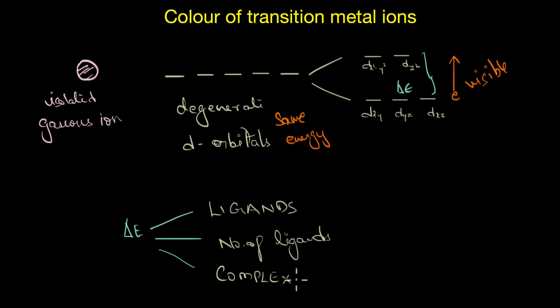Now, we cannot discuss more about these factors in this particular video. But to give you an overview, if we have a strong ligand, then the d energy levels would split more and therefore the delta E would be larger. Whereas, if we have a weak ligand, the delta E would be smaller. And depending on this energy difference, we get the corresponding color.